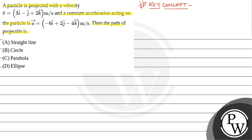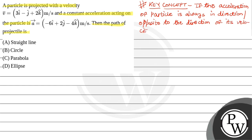then the particle moves in a straight line motion. So if the acceleration of a particle is always in direction or opposite to the direction of its velocity, then the particle moves in a straight line.